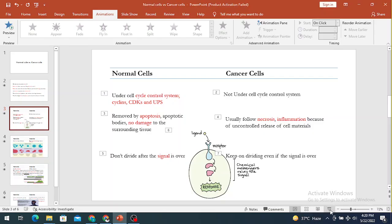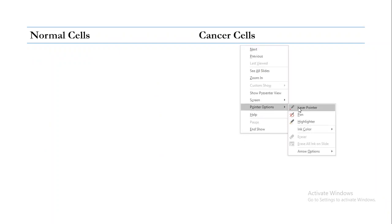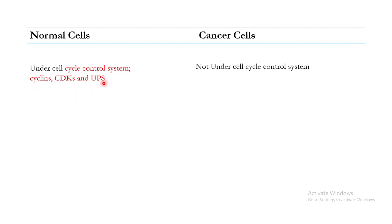Welcome back to this next video — the second on the differences between normal cells and cancer cells. In the last video, I told you that normal cells are under the cell cycle control system, using cyclins, CDKs, and the ubiquitin-proteasome system, while cancer cells are not under the cell cycle control system, so their division is abnormal.